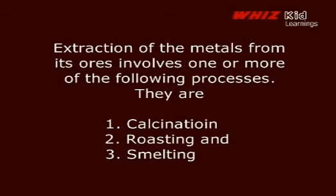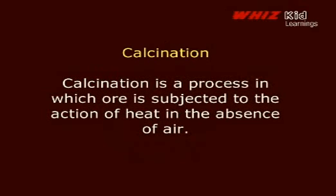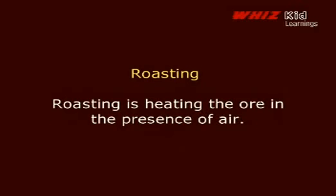Extraction of the metal from its ores involves one or more of the following processes: 1. Calcination; 2. Roasting; 3. Smelting. Calcination is a process in which ore is subjected to the action of heat in the absence of air. Roasting is heating the ore in the presence of air.